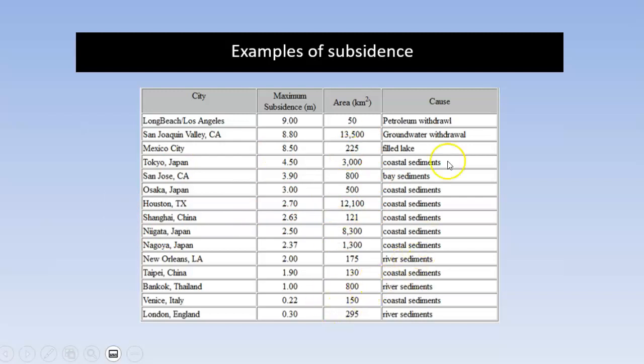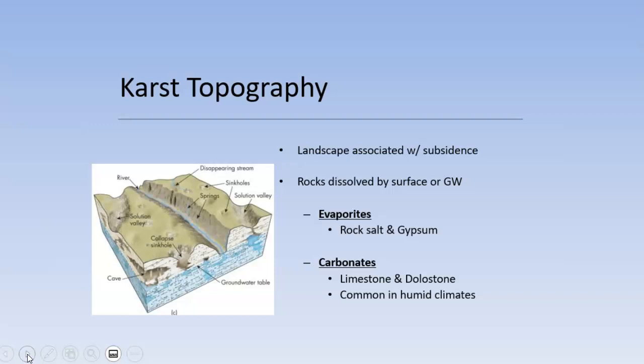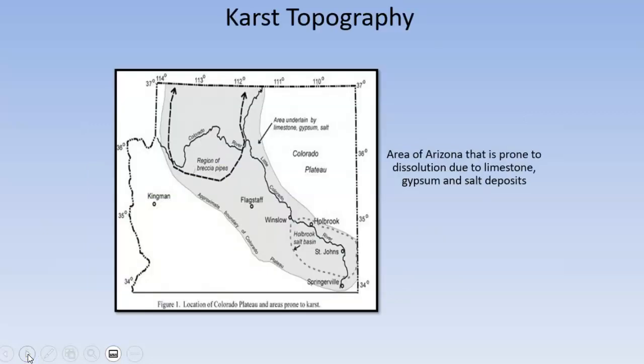Withdrawing oil, groundwater withdrawal, and things like that all lead to this sinking of the land surface. Areas prone to cavern collapse features are those that have a high amount of limestone or evaporite deposits. Because they're so susceptible to dissolution, you get what's called a karst topography — a general term to describe an area with these subsidence and dissolution features. The whole general area with sinking land, dissolving land, and collapse features would be called a karst topography, related to the type of geology that exists there rather than extraction of groundwater or oil.